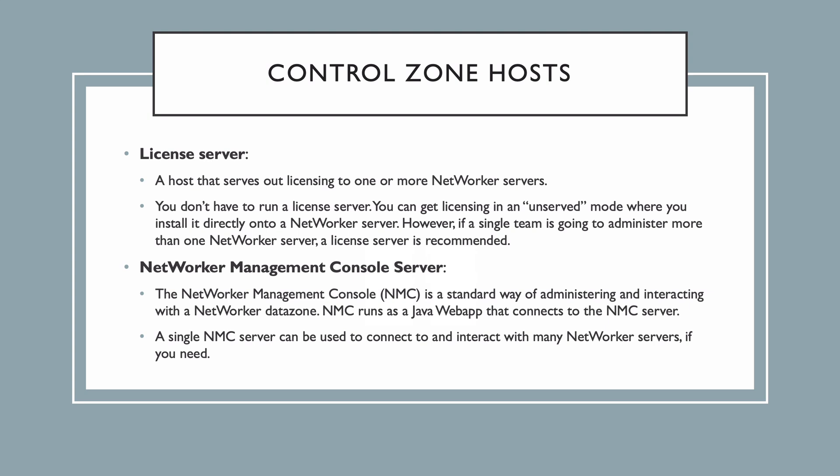We'll start with the hosts that you may find in the control zone. The first host you'd find in a control zone is the license server — that's a host that your licenses are registered against. From that server, you can allocate licensing to individual NetWorker servers within your environment, or each data zone if you will. Now, the license server isn't actually mandatory. NetWorker supports what we refer to as served and unserved license models. In the served license model, one or more NetWorker servers get their licensing from the license server.